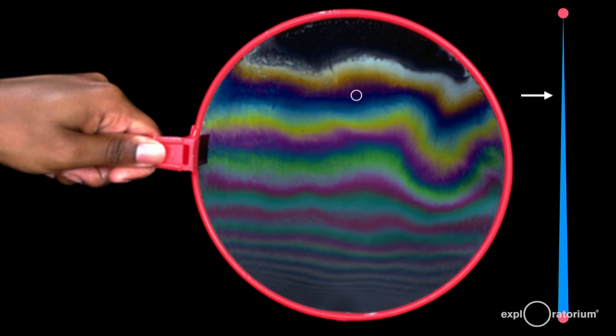A bit lower, and the still thicker bubble cancels yellow. White minus yellow appears blue.